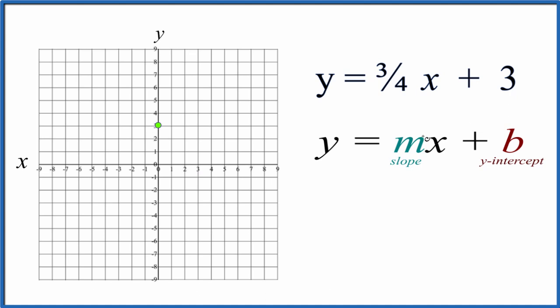For the slope m, that's three-fourths, and you can think about this as rise over run.